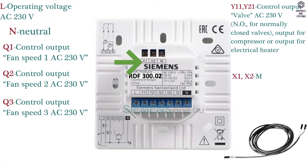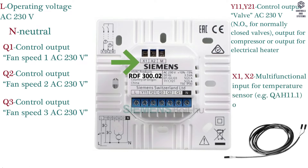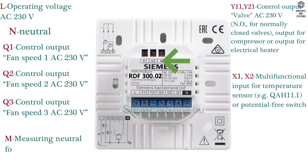X1 and X2 is multifunctional input for temperature sensor, for example QAH11.1, or potential-free switch. M is measuring neutral for sensor and switch.